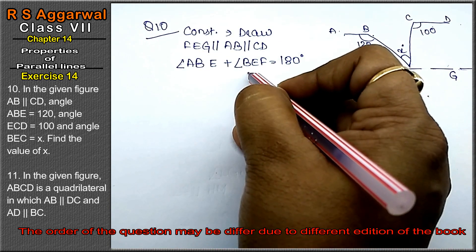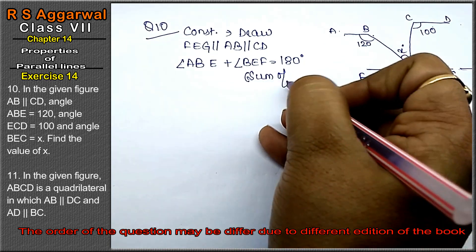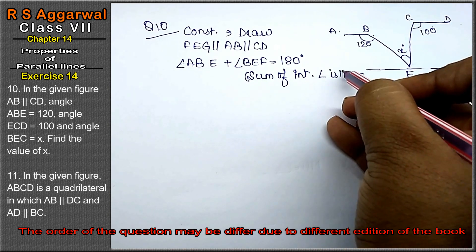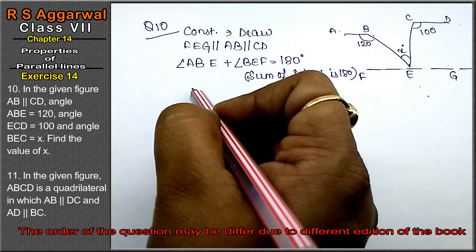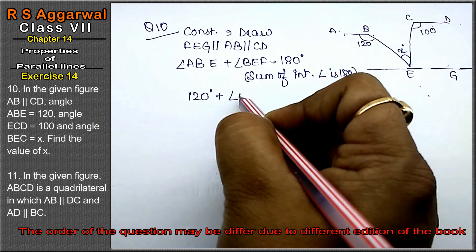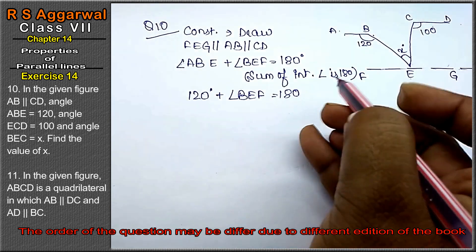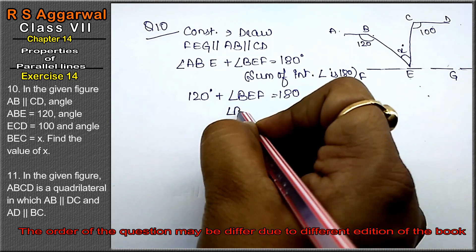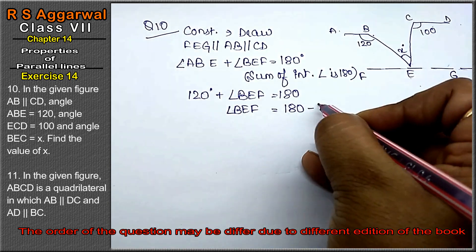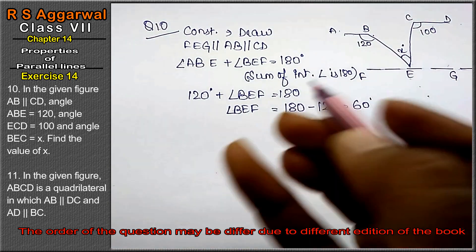Why? Because the sum of interior angles is 180 degrees. So angle ABE is 120, plus angle BEF equals to 180 degrees. So angle BEF equals to 180 minus 120, that is 60 degrees.